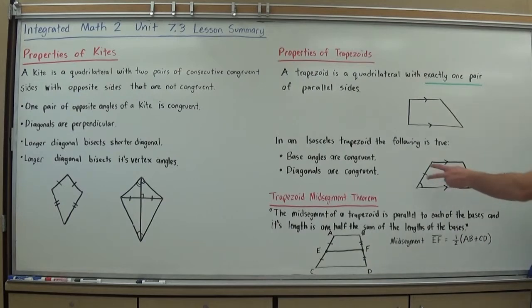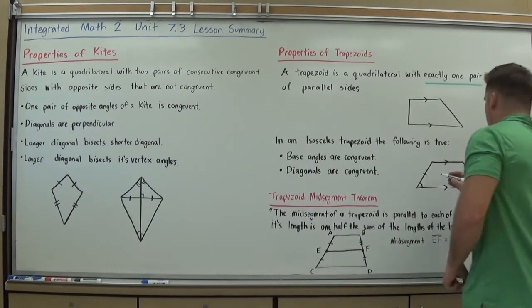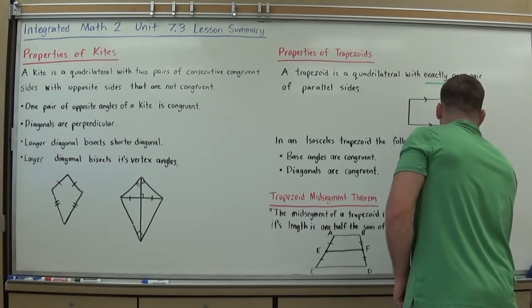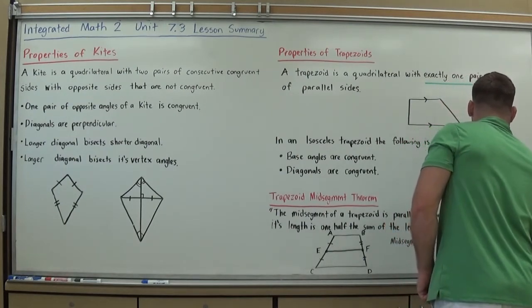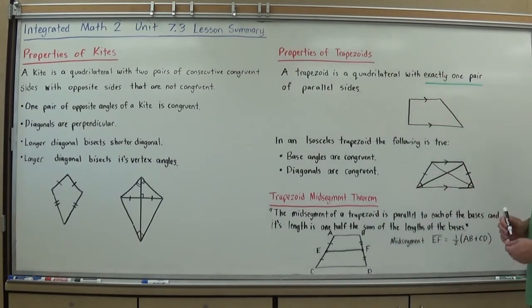And there are a couple extra rules that come with that isosceles trapezoid. One, well obviously these non-parallel sides have to be congruent, but if that's the case, then the base angles are going to be congruent, and I forgot to draw that on there for you, but also the diagonals will be congruent. So if I draw these diagonals, these diagonals are congruent to each other.